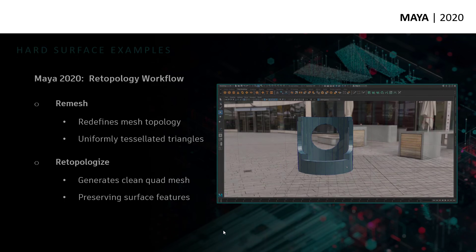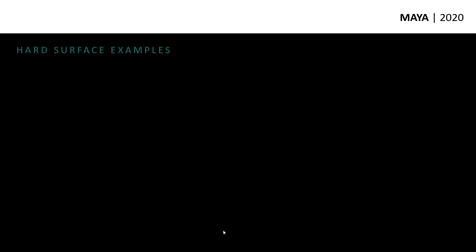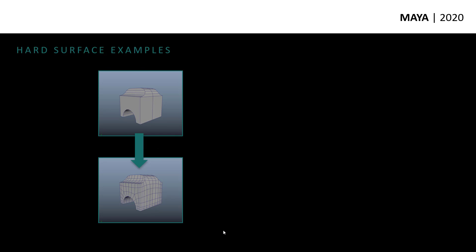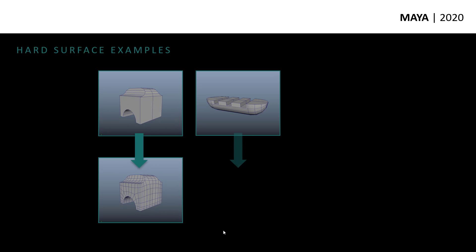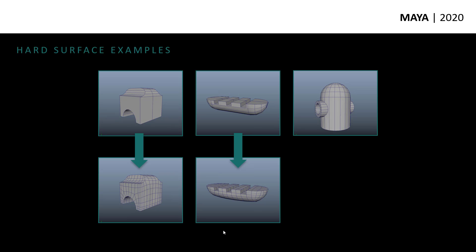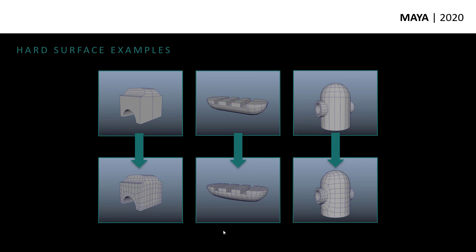I'm going to talk about a few different workflows that this opens up. One is the obvious one — mechanical or hard surface modeling. These are objects I built to demonstrate how we can take something that was a Boolean of multiple shapes: cubes, cylinders, toruses, cones, spheres, and capsules merged into a single unified mesh, which gives really ugly topology. But at the bottom I've got the re-topologized version with a nice clean even distribution and nice edge flow. They look exactly the same — they just have clean topology.